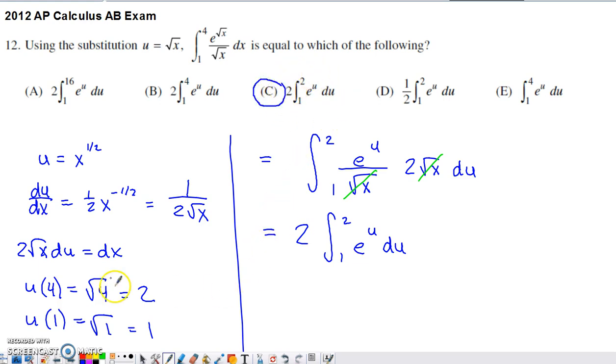But the easy way to transition those limits of integration, this is the x value at the upper limit of 4. Well, if I do 4 to the 1 half power or square root of 4, I get my new upper limit of integration that is now a u value.